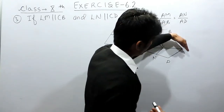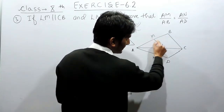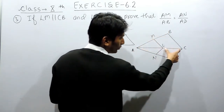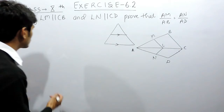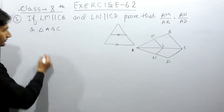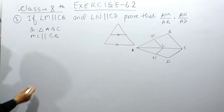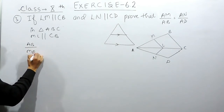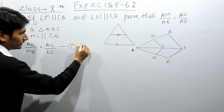Similarly, in triangle ABC, ML is parallel to BC — this is given. So if this line is parallel to BC, it must divide the other two sides in equal proportion. Therefore, in triangle ABC, since ML is parallel to CB, we get: AM upon MB = AL upon LC. This is our first equation, by the Basic Proportionality Theorem.